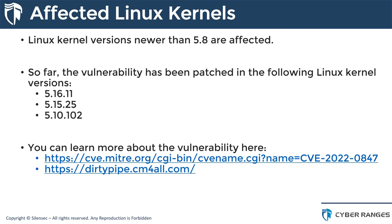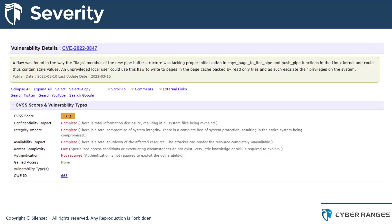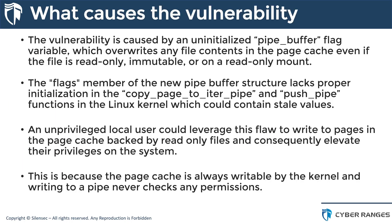Linux kernel versions newer than 5.8 are affected. The vulnerability has been patched in kernel versions 5.16.11, 5.15.25, and 5.10.102. Distributions like Ubuntu and Debian have all released patches, and as of recording this video the vulnerability has been patched in most modern versions of the Linux kernel. You can learn more by looking at the MITRE post and the write-up by Max Kellerman. The CVSS v3 severity score is 7.2.